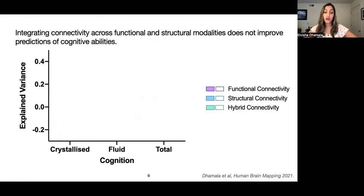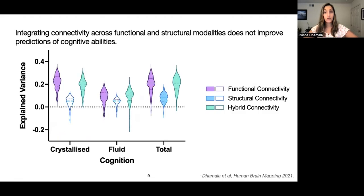Here we have the different cognitive scores and the explained variance for the models. Models with colored violin plots indicate that they perform better than chance, whereas the others did not. We found that functional and hybrid connectivity are always able to predict cognition better than chance, whereas that's not the case with structural connectivity. In other words, functional connectivity is generally able to better predict cognition compared to structural connectivity, and integrating the two into a hybrid connectivity doesn't actually increase the prediction accuracy beyond what we already see with functional connectivity.